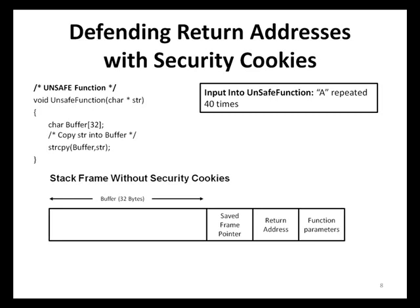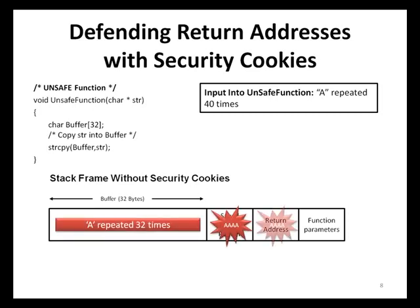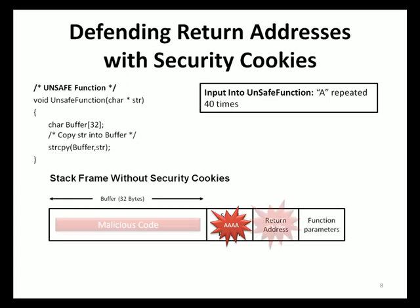Here is the standard stack frame created for a call to unsafe function. The 40 A's are provided to unsafe function, and a buffer overflow occurs. When the function completes and the function epilogue begins, the operating system reads the value of the saved return address and tries to execute the instruction pointed to by this address. If the input contained malicious code and the last four A's were replaced with the address of that malicious code, now contained in buffer, a malicious user would be able to leverage unsafe function to execute arbitrary commands.